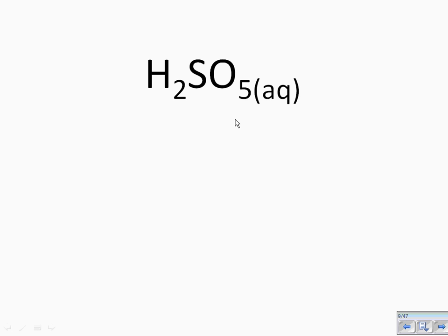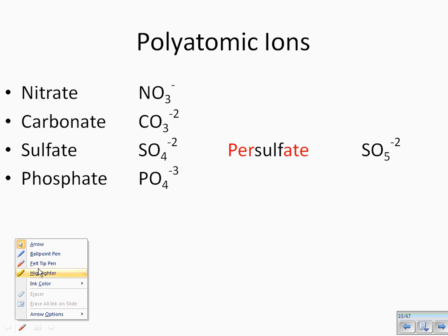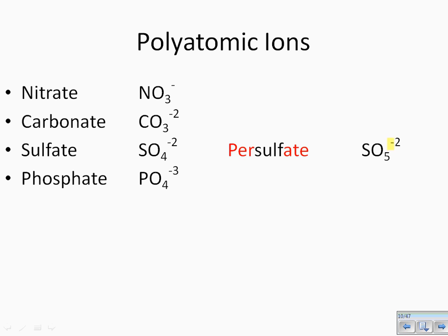So in this compound, we have two hydrogen ions bonded to persulfate. Why do we have two hydrogen ions? Well, persulfate has a charge of negative two, and we know that our hydrogen ion is plus one, so we would need two hydrogen ions bonded to persulfate.